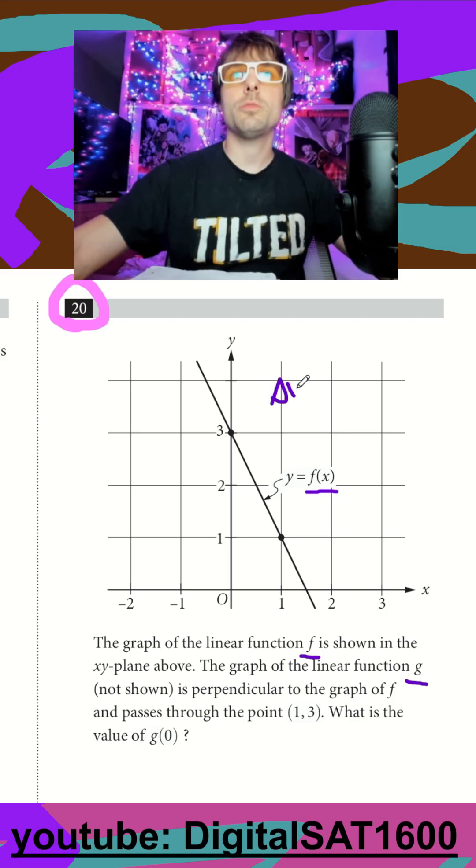Just remember your slope is your change in y over your change in x. So it looks like we lost 2, so negative 2 in my y. We gained 1 in the x, so positive 1.